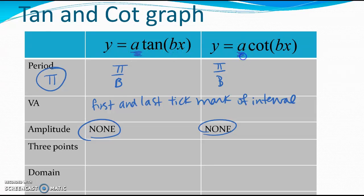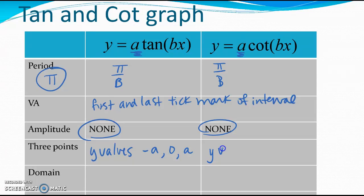They do have an a value, but a is what helps us find the amplitude. For tangent and cotangent, the three basic points have y-values of negative a, 0, and a for tangent, and a, 0, negative a for cotangent. These graphs essentially look like flip versions of each other.